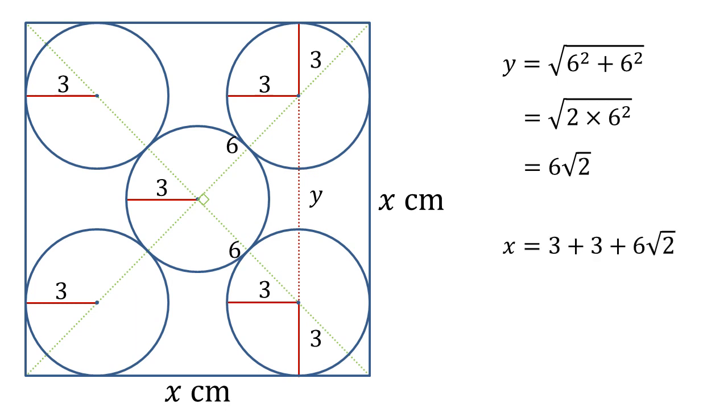So we've now worked out y, we can put all this together. So x must be equal to 3 plus 3 plus 6 root 2, which is 6 plus 6 root 2. If you want to factorize it, that's going to be 6 lots of 1 plus root 2, or if you want it in decimal form, that's going to be 14.485 centimeters to three decimal places.